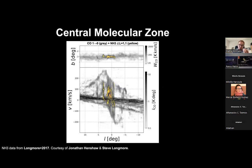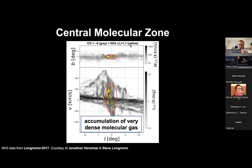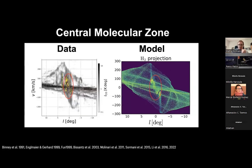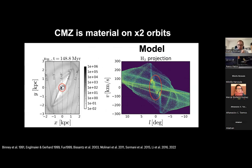Getting even closer to the center, we reach the central molecular zone (CMZ). It is an accumulation of very dense gas in the center — the ammonia emission, tracing gas denser than CO, is very concentrated in the center. In the model you see a similar structure, and essentially this is the star-forming ring often found not only in the Milky Way but in many barred galaxies. The CMZ is the counterpart of this star-forming ring.